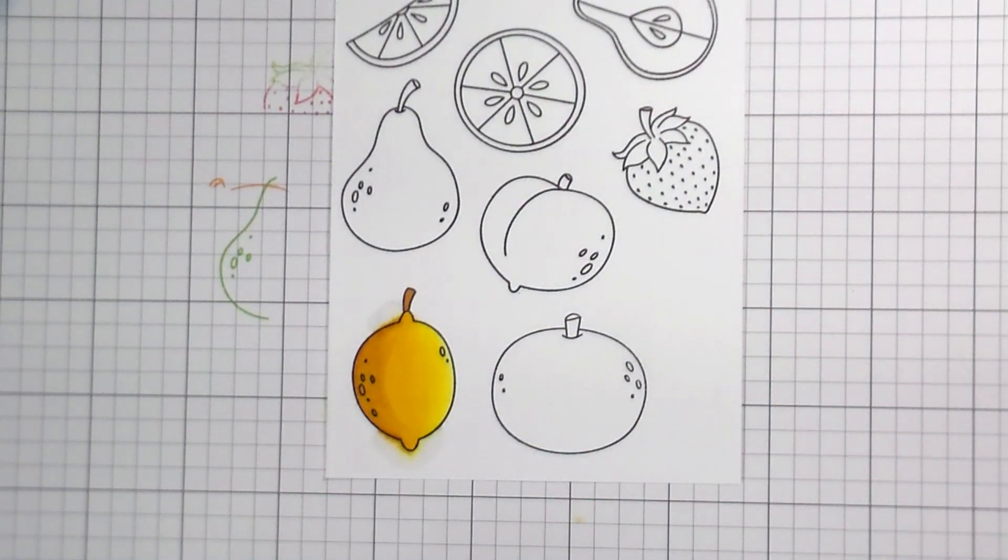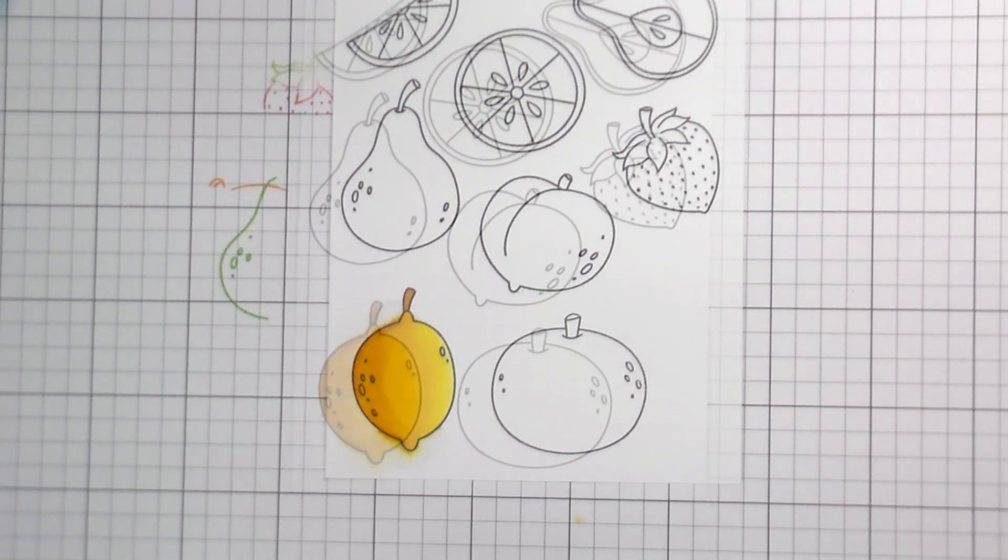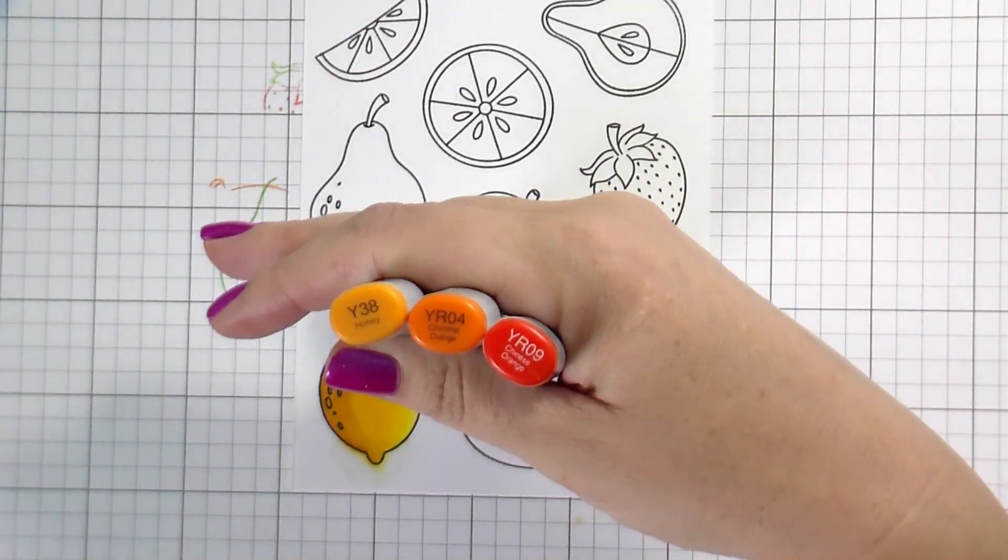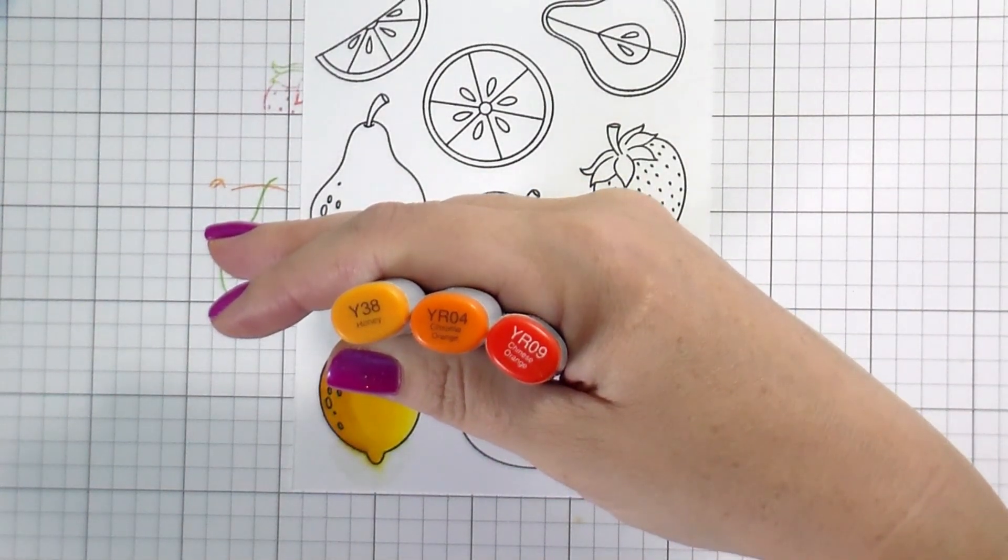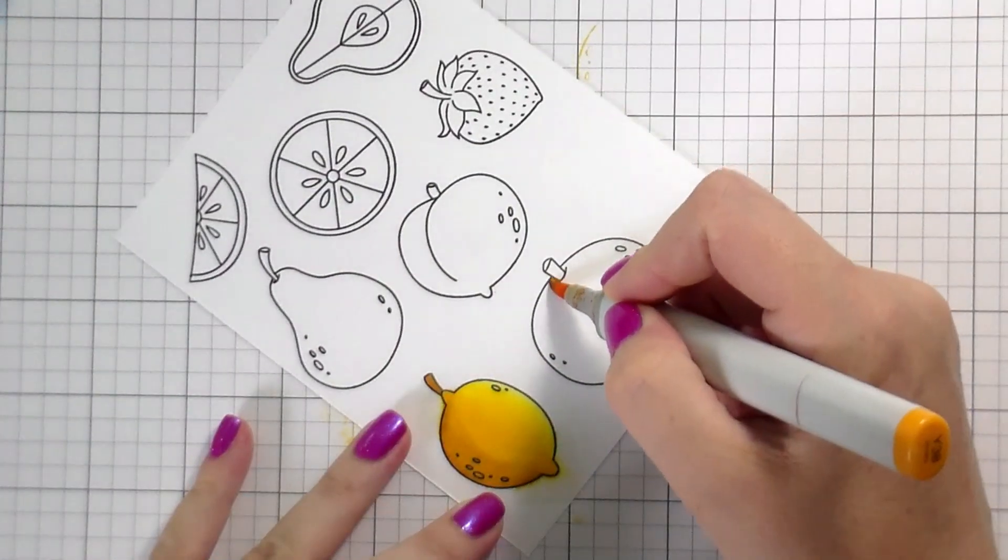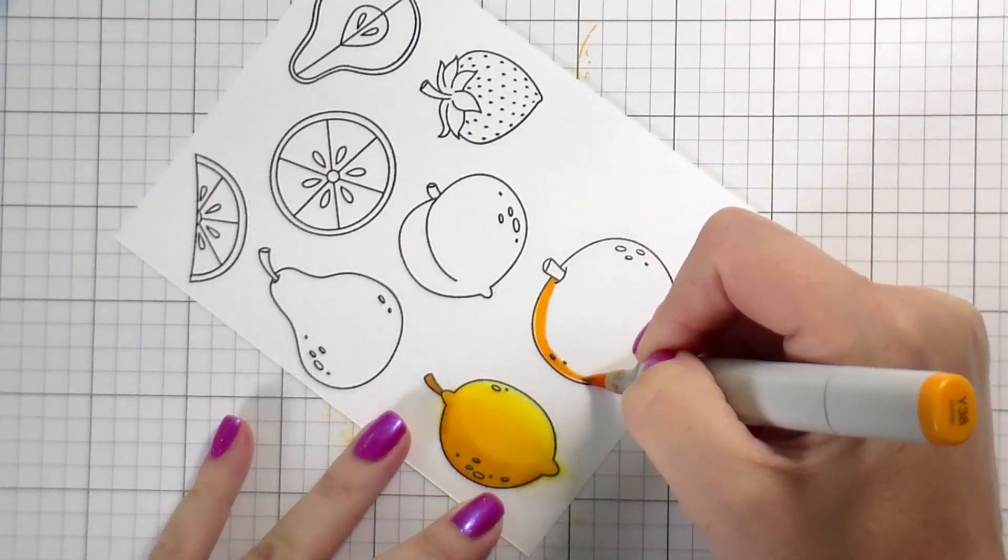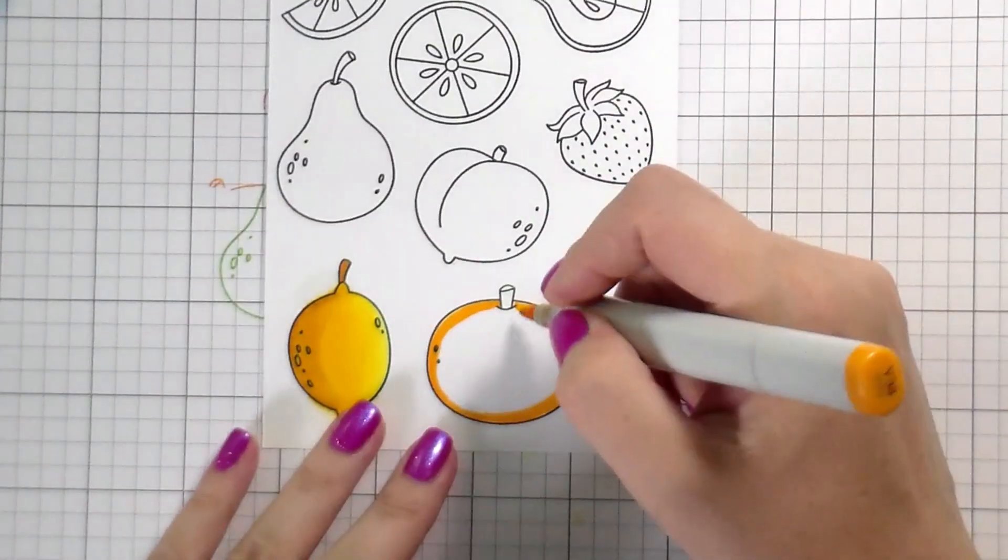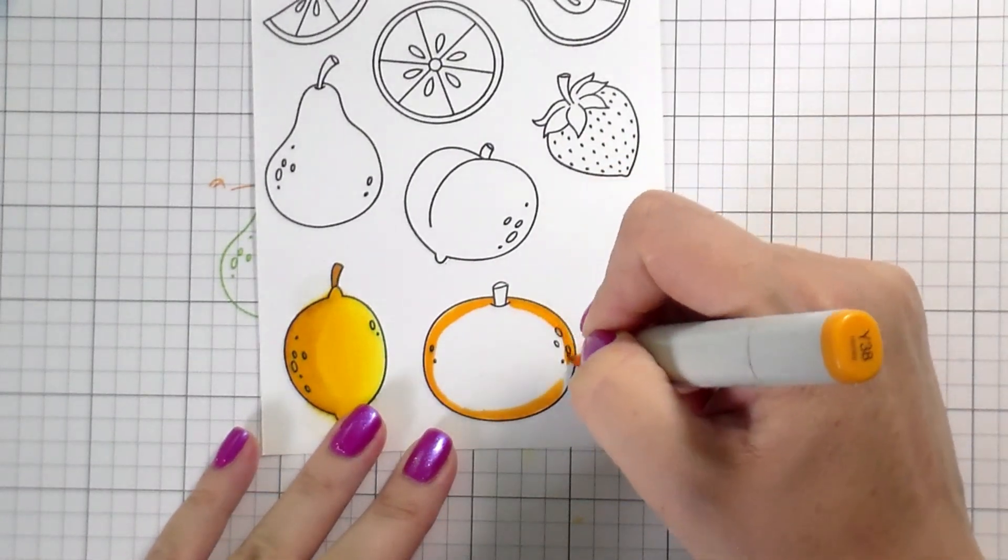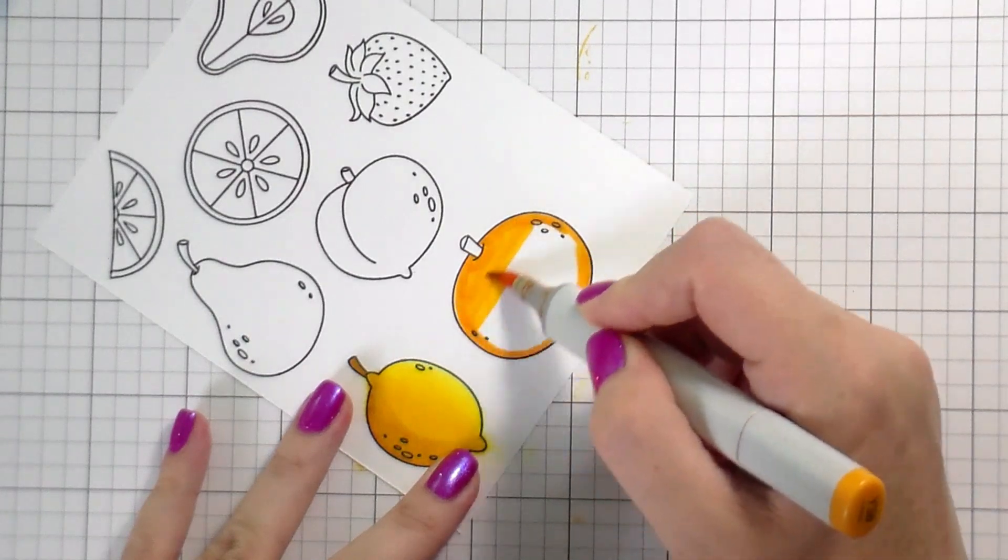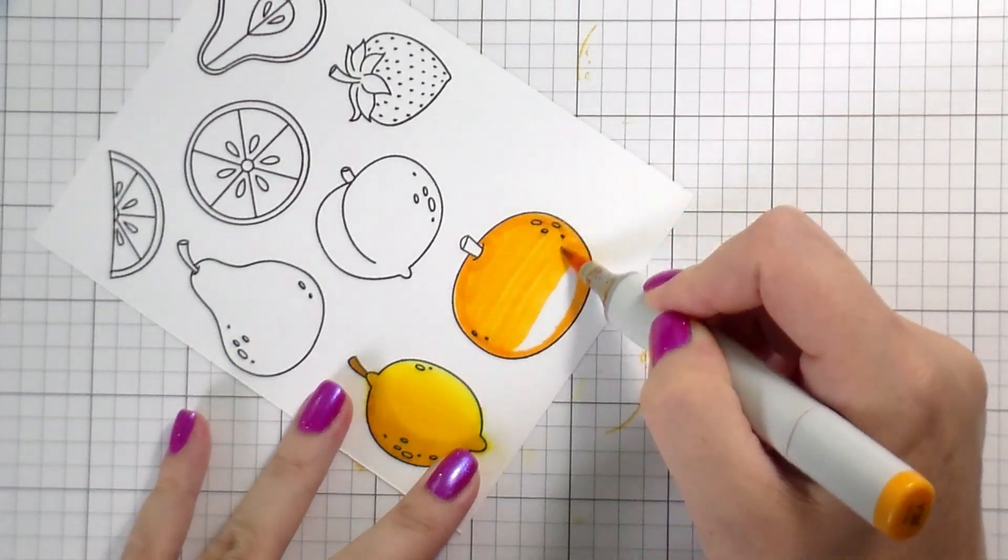If you have a red, very challenging. A red is very challenging with the bleeding, I'm not going to pretend like it's not. You'll notice that even though that YR24 was really dark when we put it down, it didn't stay that way. It didn't stay that way because Copics are transparent. You can layer them over each other and a lighter color will lighten up a darker color.